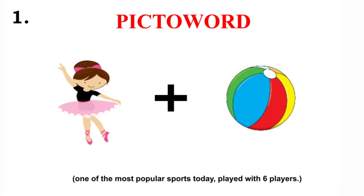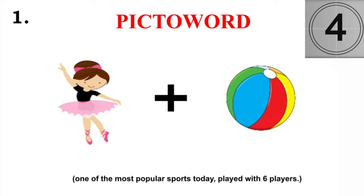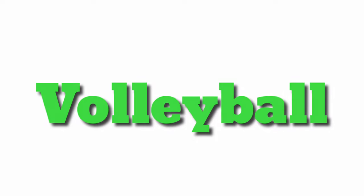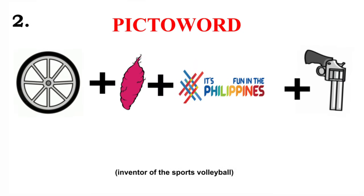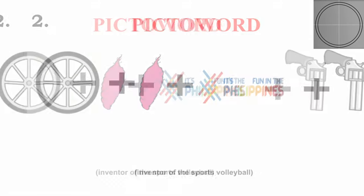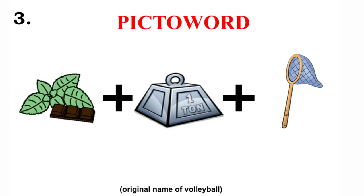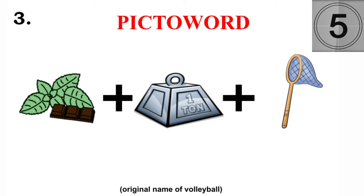Number 1: it is one of the most popular sports today, played with 6 players. Number 2: the inventor of the sport, volleyball. Number 3: this is the original name of volleyball. Pick the word — volleyball. Good job!